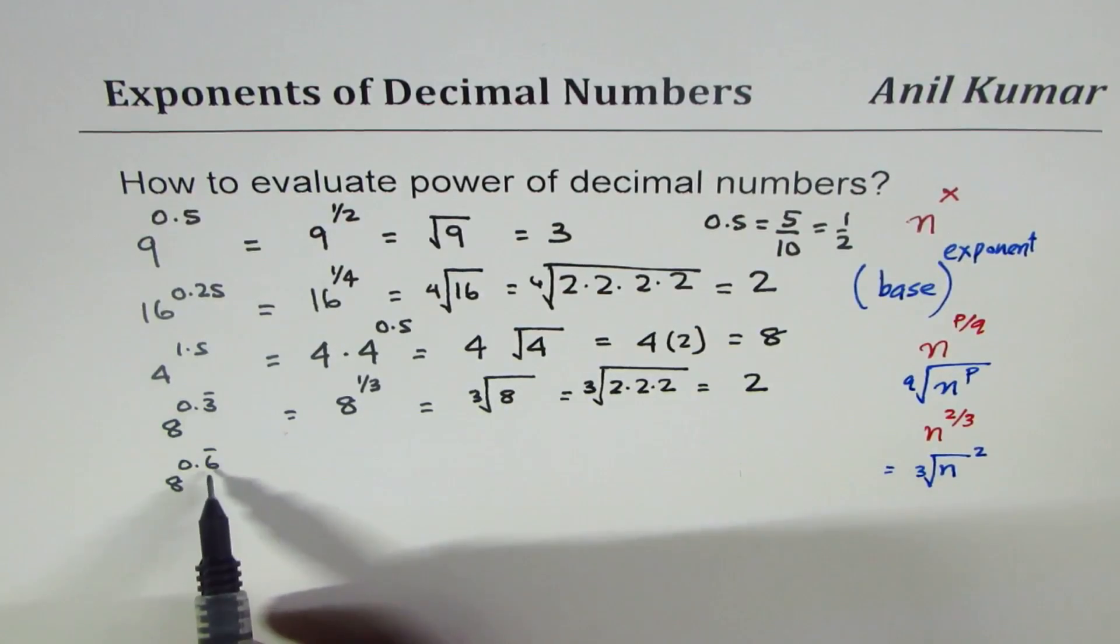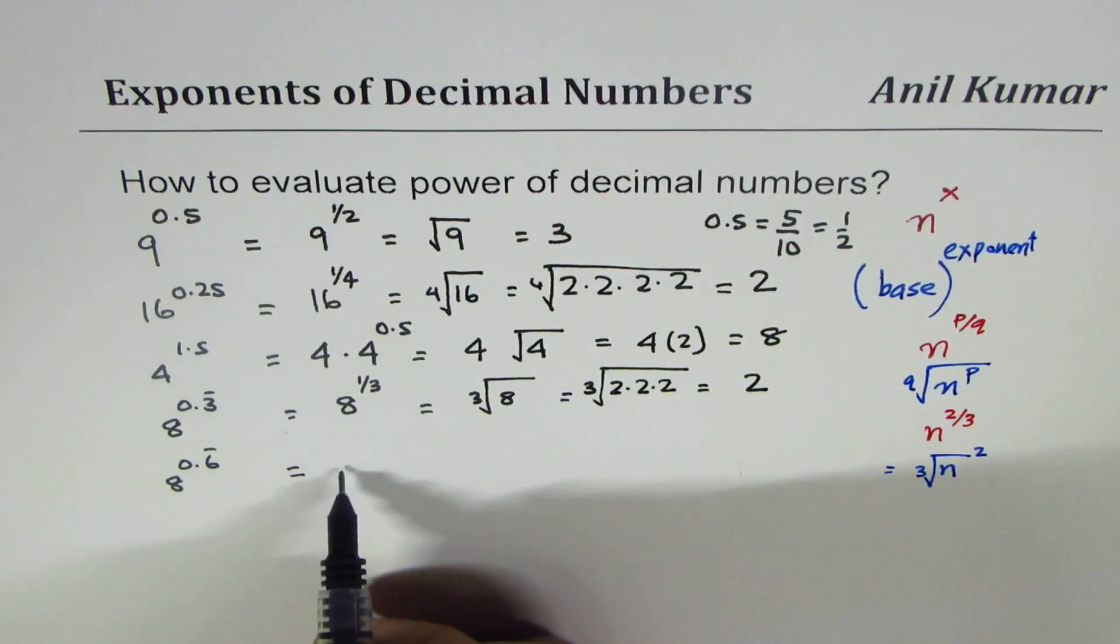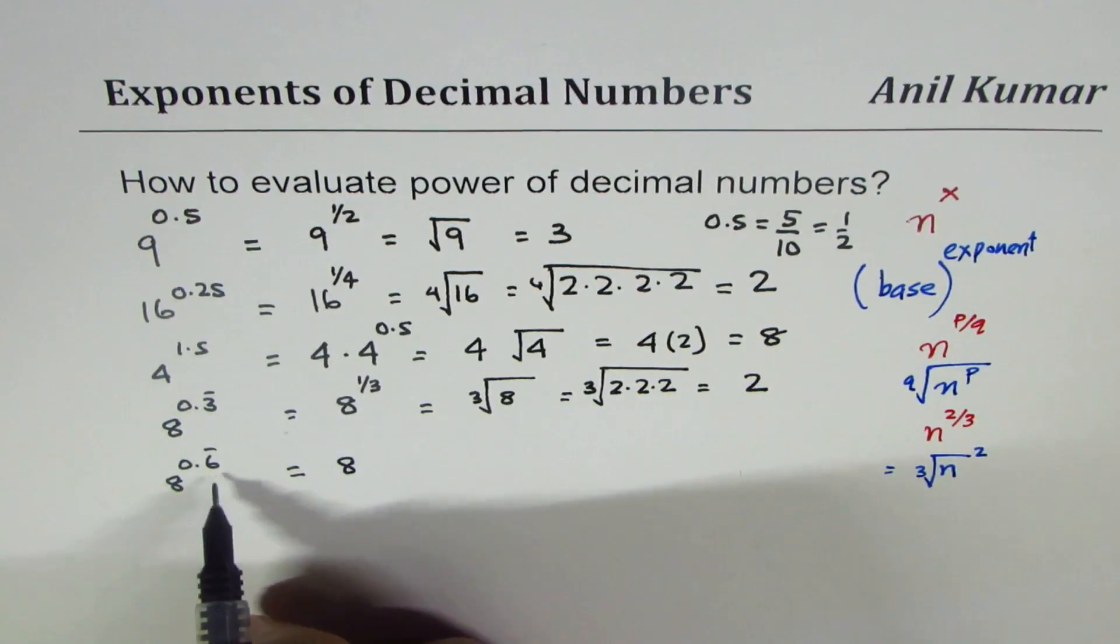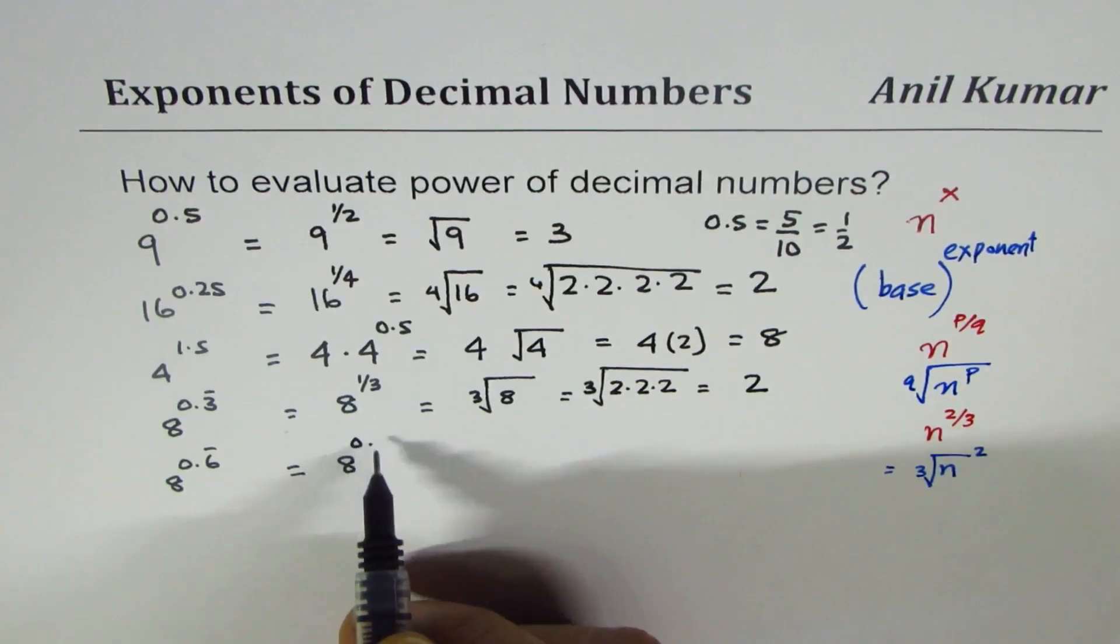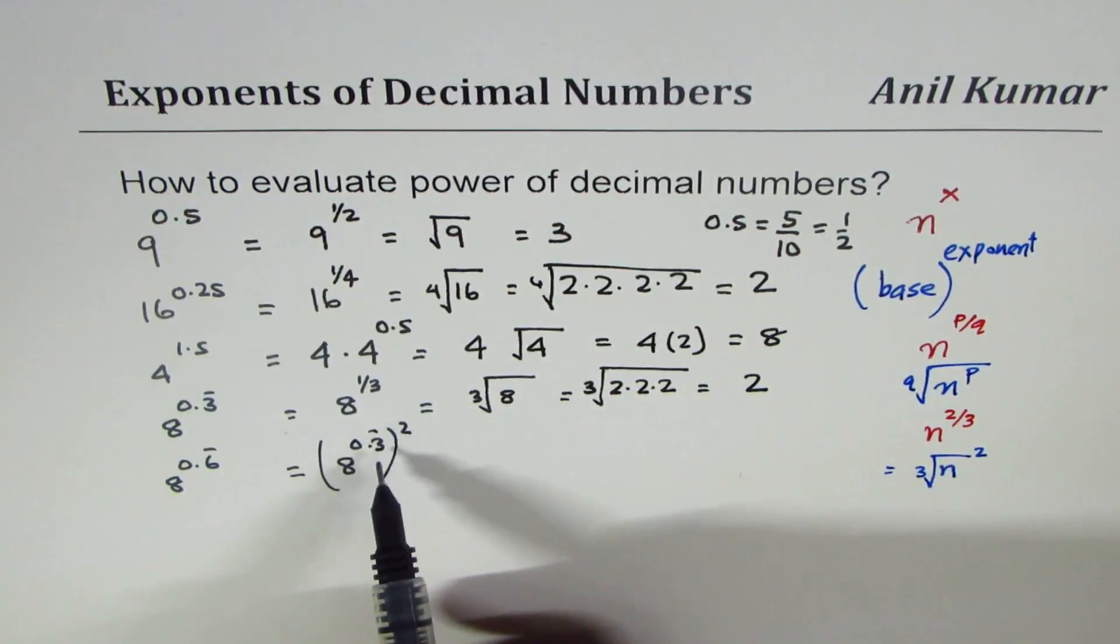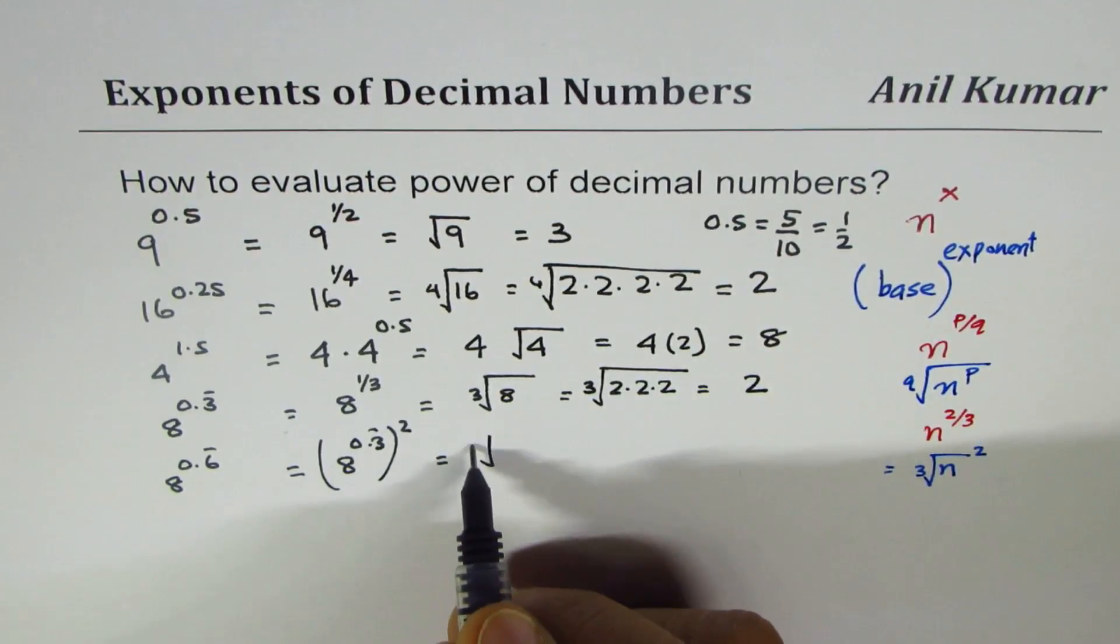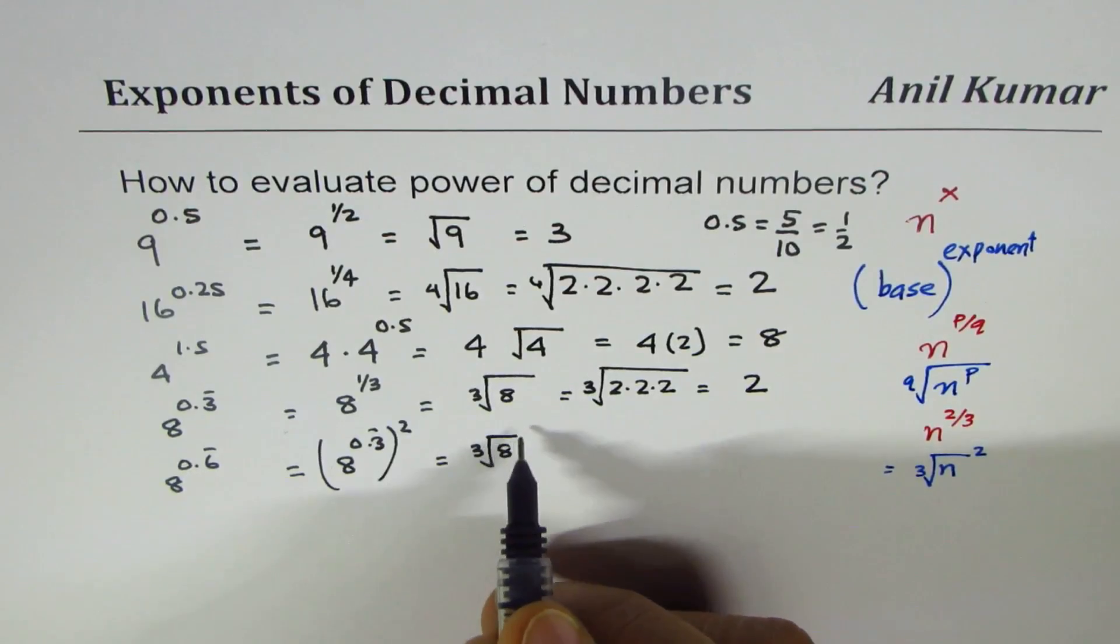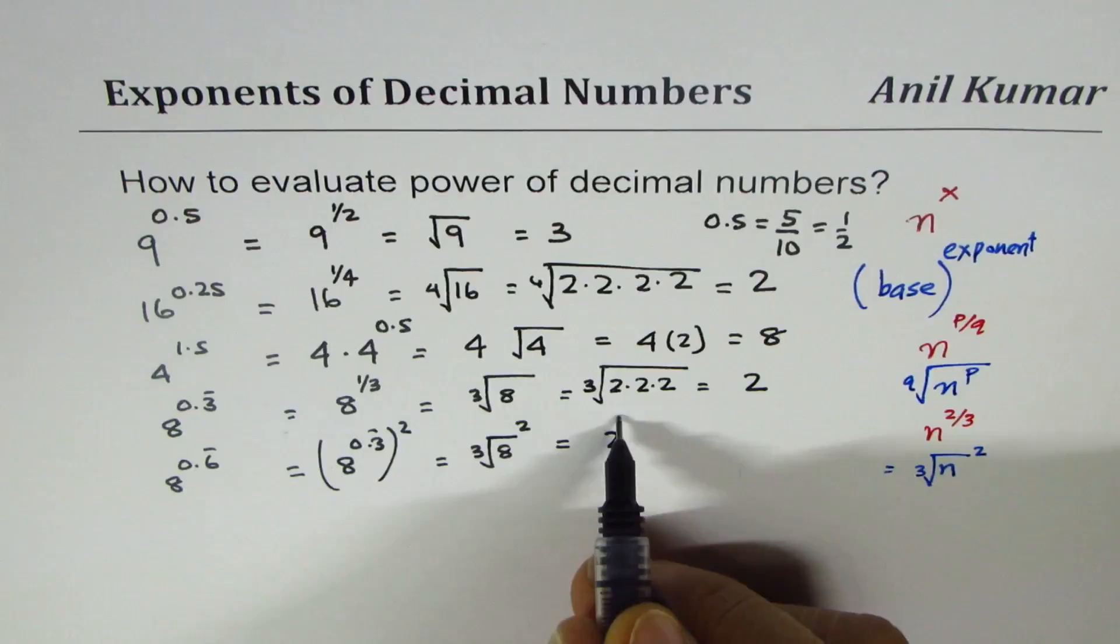Now I have multiplied this by 2. Let me show you this part. We could write 8 to the power of 0.6 recurring as 8 to the power of 0.3 recurring whole square, because power rules, they get multiplied. It is as good as writing cube root of 8 and then square. We know cube root of 8 is 2, so we are looking for 2 squared, which is 4.